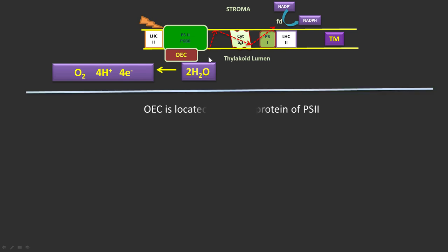This complex is present on the D1 protein of PS2 which is located on the luminal side of PS2. This is the luminal side of oxygen evolving complex and there is a D1 protein, D2 protein that we have discussed in our previous video.